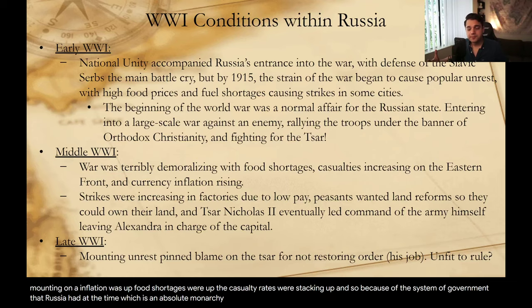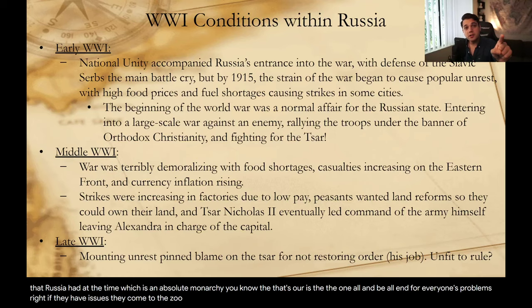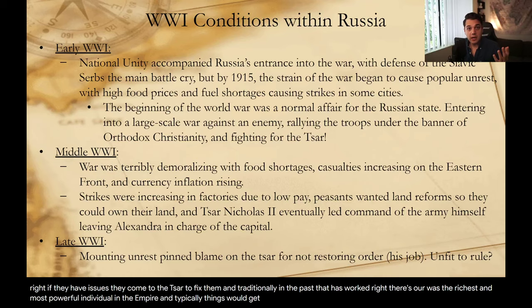Because of the system of absolute monarchy that Russia had at the time, the Tsar was the one-all and be-all for everyone's problems — if they have issues, they come to the Tsar to fix them. Traditionally, in the past, that had worked. The Tsar was the richest and most powerful individual in the empire and typically things would get done. But now they're just looking at him to fix stuff, and he's not.